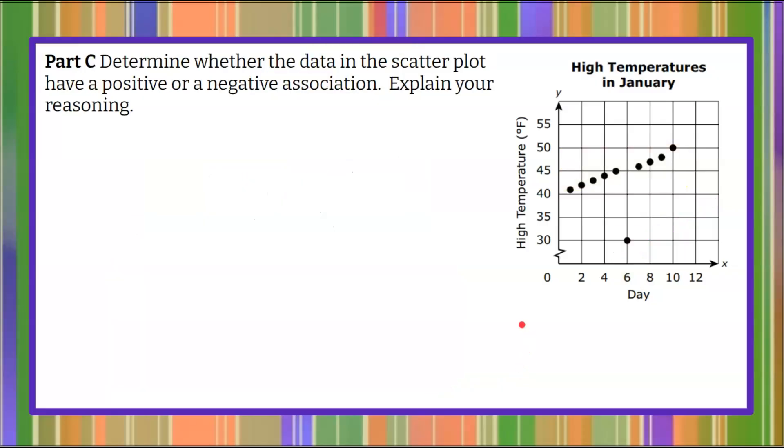Moving on to Part C. Determine whether the data in the scatterplot has a positive or a negative association and explain your reasoning. Please pause here and come back when you're ready. Welcome back. We want to find if it's positive or a negative association in our data. So when we read a graph talking about increasing or decreasing data, we want to read it left to right. So we're going to start from the left and we're going to move to the right. And how whatever the data does there tells us its association.